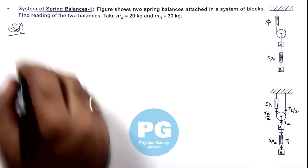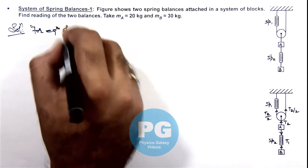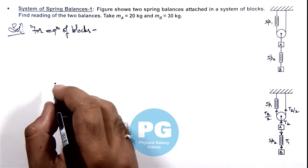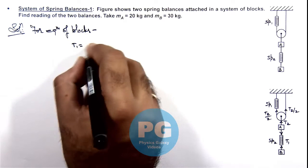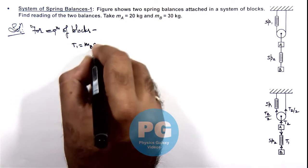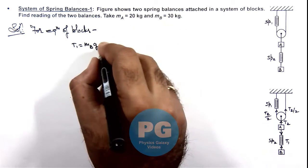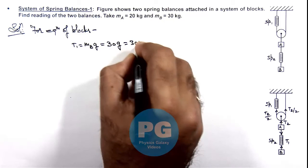Now we can write for equilibrium of blocks, we can balance the forces on these. So here we can simply write the value of T1 will be equal to m_b g because block B is at rest, so this tension is balancing the weight of this block B which is of mass 30 kg. So this can be written as 30g which is 300 newton.